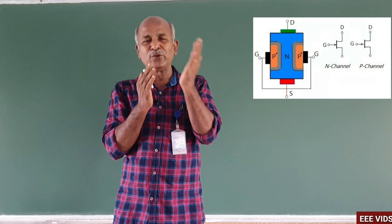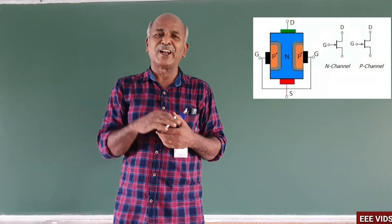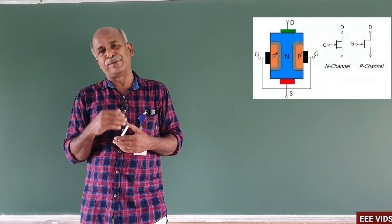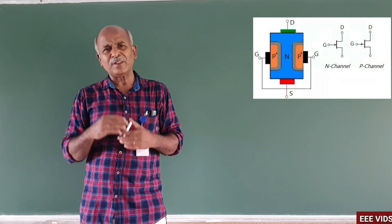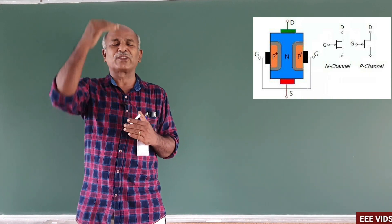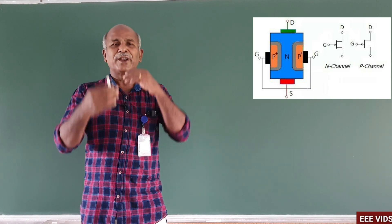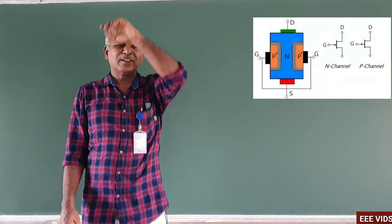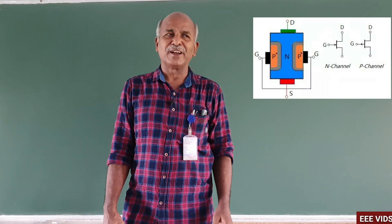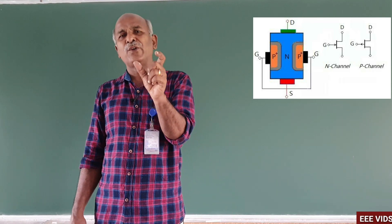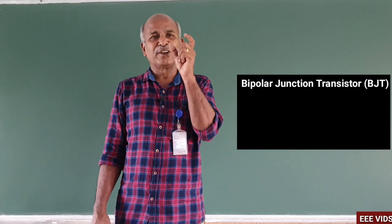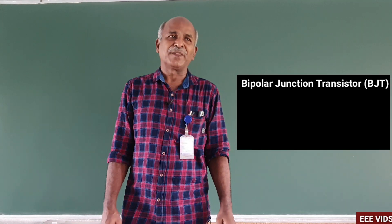As the gate-to-source negative voltage increases, the drain-to-source current changes accordingly. By changing the gate voltage, we can change the drain-to-source current. The gate-to-source voltage controls the drain-to-source output current, so the FET is called a voltage-controlled device.